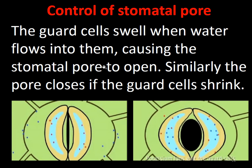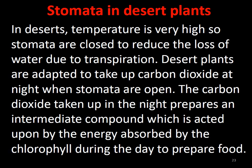Guard cells swell when water flows into them, causing the stomatal pore to open. Similarly, the pore closes if the guard cell shrinks. In desert plants, temperature is usually very high, so stomata are usually closed to reduce water loss due to transpiration. Desert plants are adapted to take up carbon dioxide at night when stomata are open, and the CO₂ taken up at night prepares an intermediate compound — starch — which is acted upon by chlorophyll energy during daytime to prepare food.